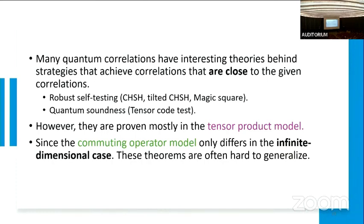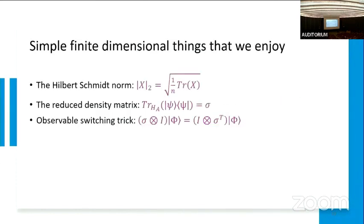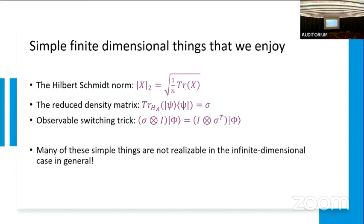However, a lot of these theorems are mostly proven in the tensor product model. The reasoning is actually kind of special. It's not that special, because the commuting operator model only really differs from the tensor model in an infinite dimensional setting. So these theorems are often hard to generalize. And when I say hard to generalize, it's not exactly because of some hardcore technique that's missing, it's really these simple things, such as the Hilbert-Schmidt norm, or the reduced density matrix, that we don't know how to do in an infinite dimensional case. In fact, if you take all three of these properties, and maybe if you're on your A-game, you can write your thesis, you will get an excellent paper on nonlocal games.